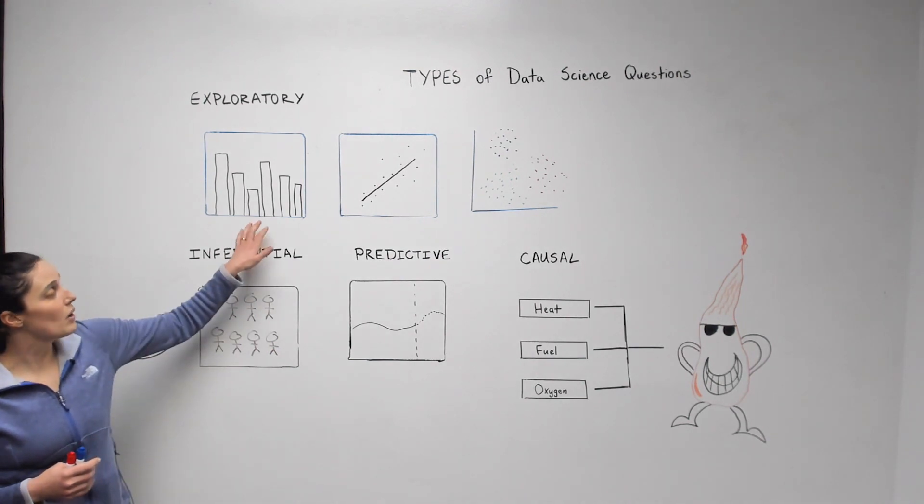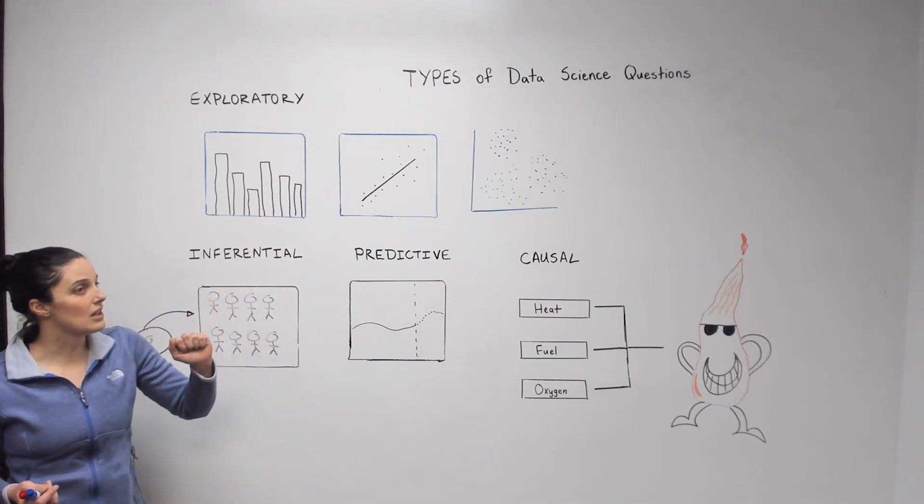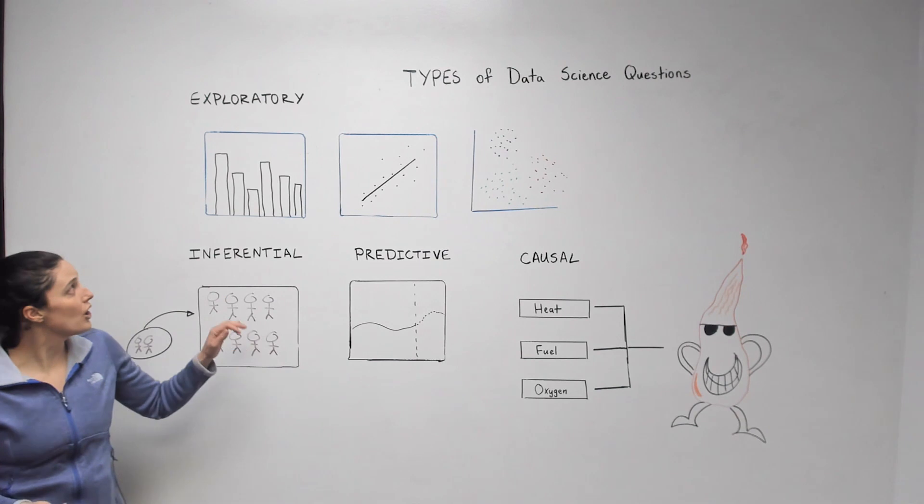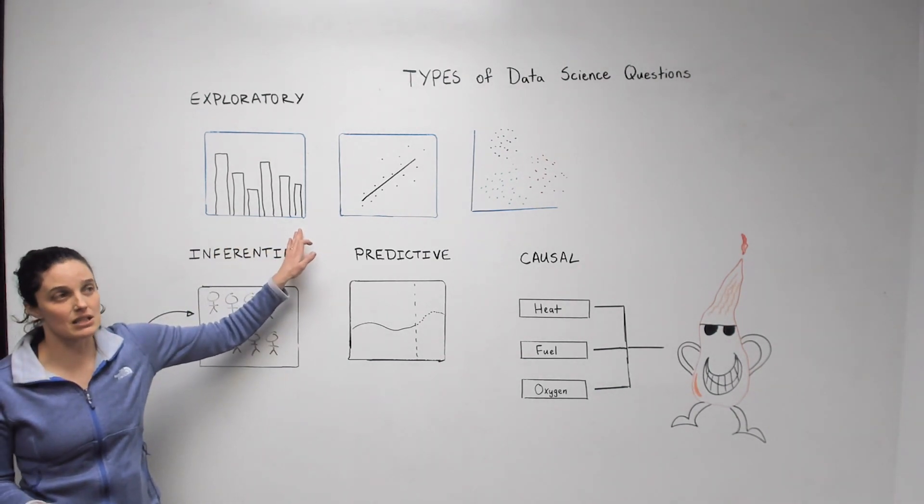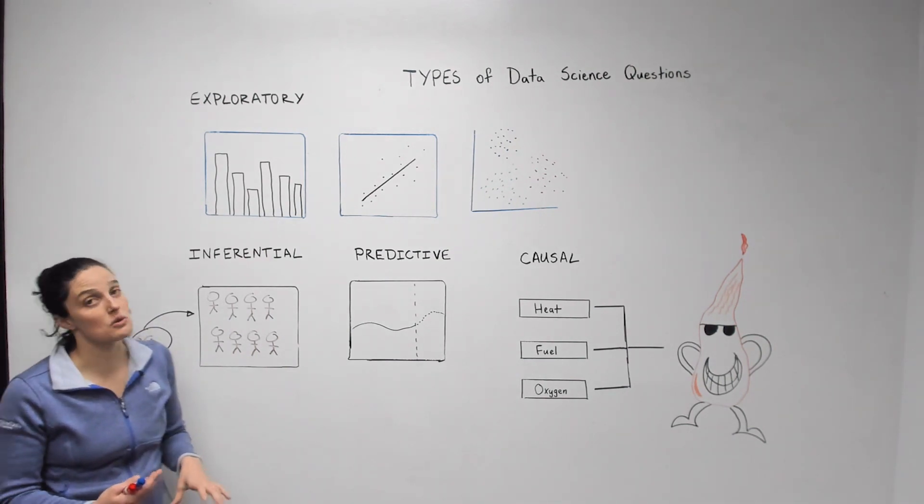So one question we might ask is how are our variables distributed? One way to think about this is if we are a hardware store and we sell brooms, we want to know how many brooms we have in each store because this gives us an idea of how to move forward with the solutions we might provide.